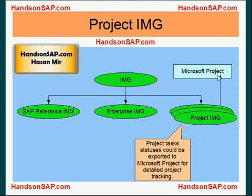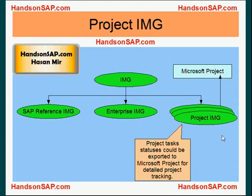So that's pretty much it about the IMG views. SAP Reference IMG contains all business processes for all the modules. Enterprise IMG contains only those business processes that your company needs, and you can create multiple Project IMGs. Each Project IMG would contain only those business processes that are part of that particular project. So that's pretty much it — I'll see you in my next tutorial.